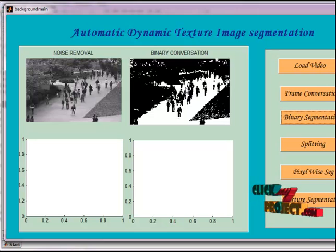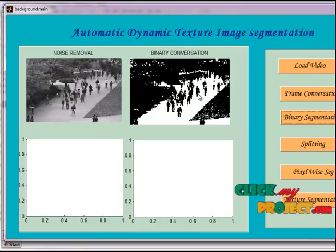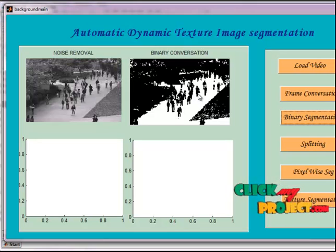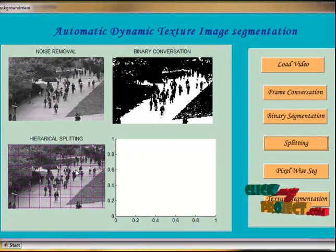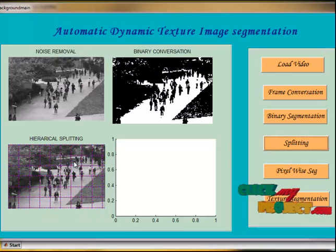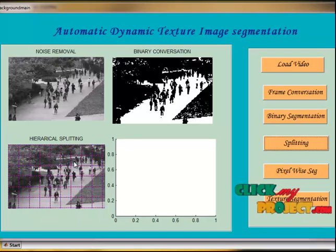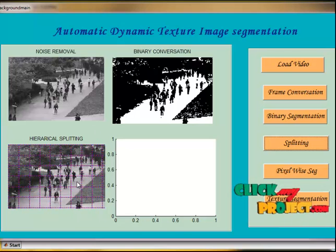Binary conversion uses image segmentation — the process of partitioning a digital image into multiple segment sets of pixels, also known as superpixels. The goal of segmentation is to simplify or change the representation of the image into something more meaningful and easier to analyze, typically used to locate objects and boundaries in images. The next step is hierarchical splitting, which uses feature accumulation, merging, and pixel-wise classification. Hierarchical splitting recursively splits each input frame into square regions of varying sizes; a necessary prerequisite for merging to be successful is that individual regions are uniform in texture.